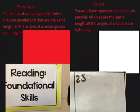Squares have opposite sides that are parallel. All sides are the same length and all the angles of a square are right angles.